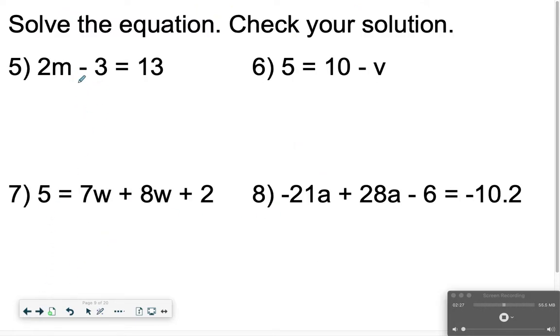Solving the equations, these are our multiple step equations. I'm going to add 3 to both sides first for number 5. I get 2m is equal to 16. And then I'm going to divide both sides by 2 to get m is equal to 8.